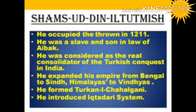He formed the Turkan-i-Chahalgani, an organised, selected group of 40 nobles also known as 'the Forty.' He also introduced the Iqta system, by which Iltutmish granted Iqtas — land given to army officials in lieu of regular wages. The Iqta holder, called the Muqti, was required to provide the Sultan with military assistance in times of war.